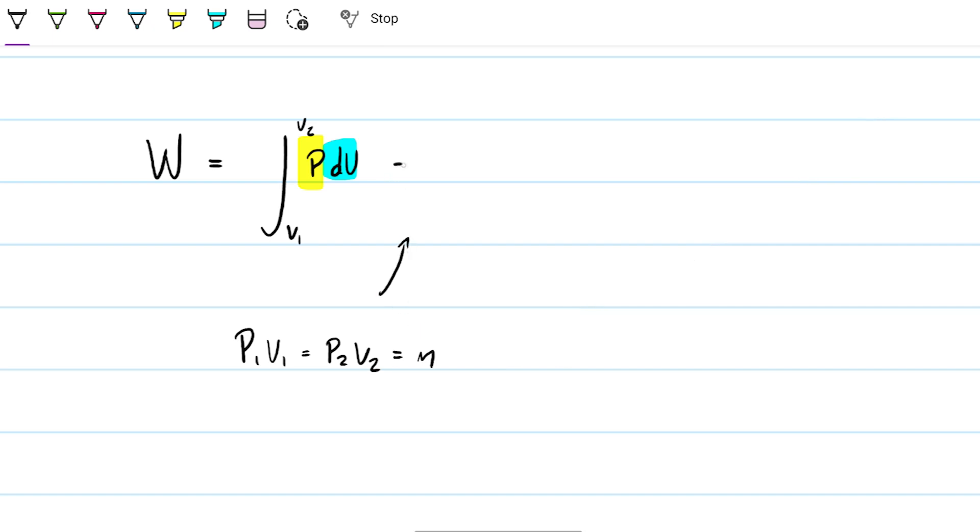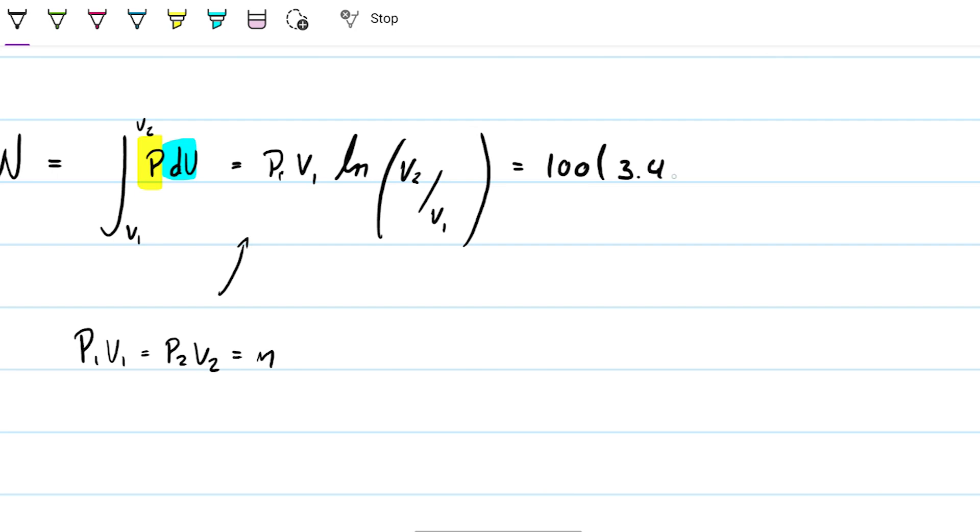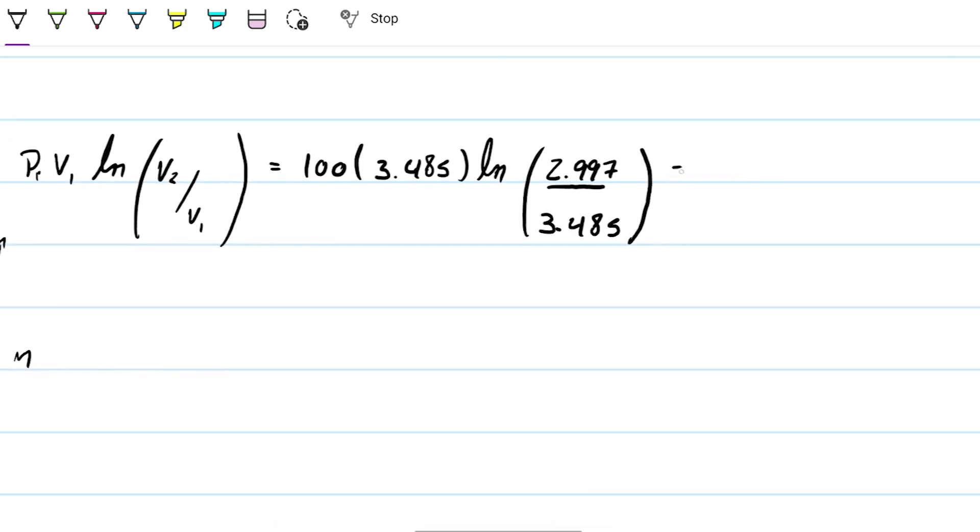I can go ahead and say that this work is the same thing as P1 times V1 natural log V2 over V1. We've done this previously and note that we have everything we can possibly need. This means that if I take 100, if I multiply by V1 that we just calculated to be 3.485, if we take the natural log of the 2.997 divided by the 3.485, I'm going to get my work. And it turns out to be 53.92.